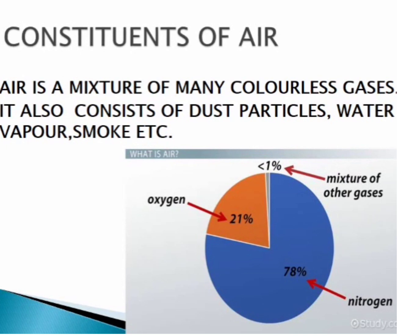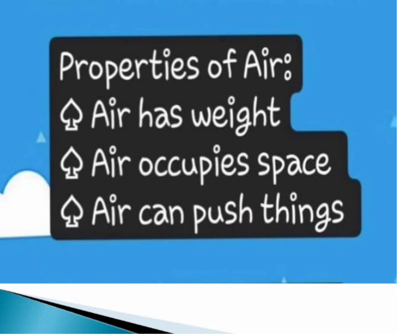Moving air is called wind. Now, what is air made up of? Air is a mixture of many colorless gases. The major constituent of air is nitrogen gas — it forms 78% of the air. Next is oxygen gas, which forms 21% of the air. In the remaining 1%, we have a mixture of gases like carbon dioxide, hydrogen, helium, argon, neon, etc.